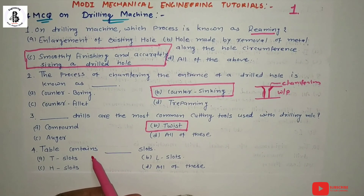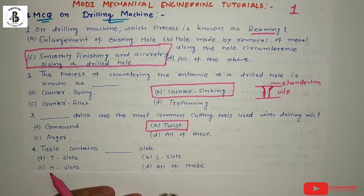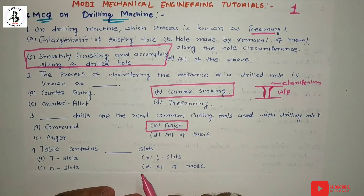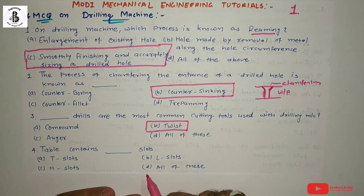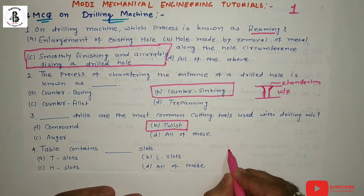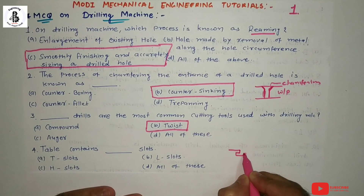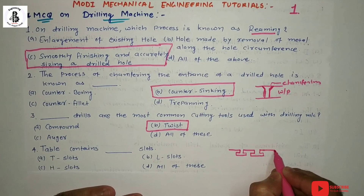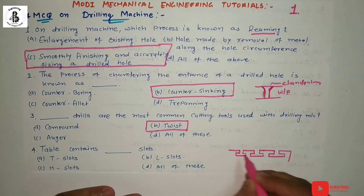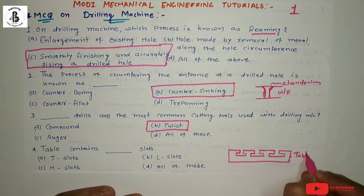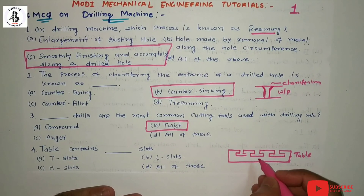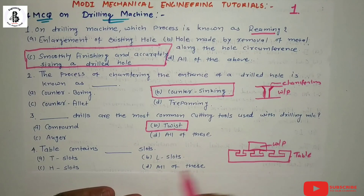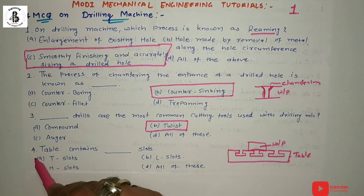The table contains which kind of slots? Option A: T-slots, option B: L-slots, option C: H-slots, option D: all of these. In all kinds of metal cutting machines, the table contains T-slots. You can see the cross-section of the table — these T-slots are used to clamp the workpiece onto the table. So the answer is option A, T-slots.